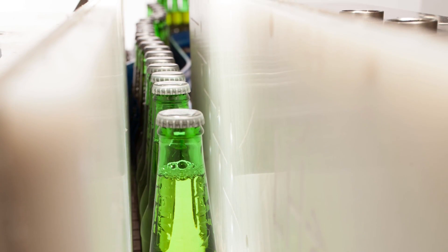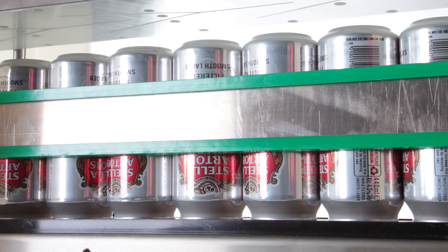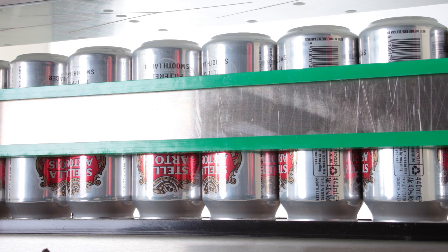The DryLine series is a range of bottle and can drying systems specifically designed for the global food and beverage market.